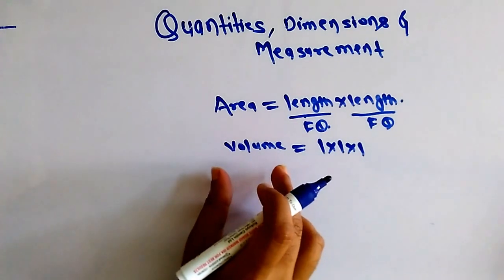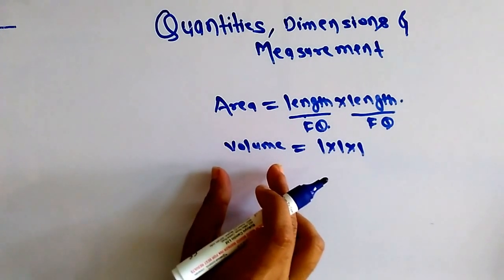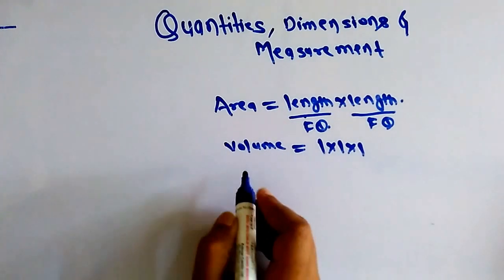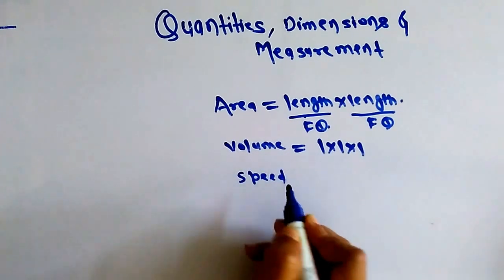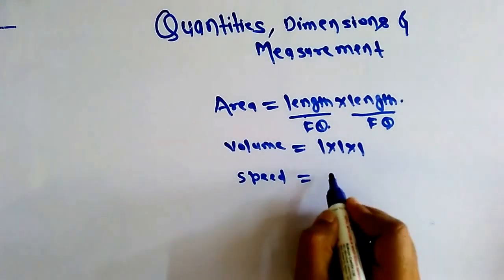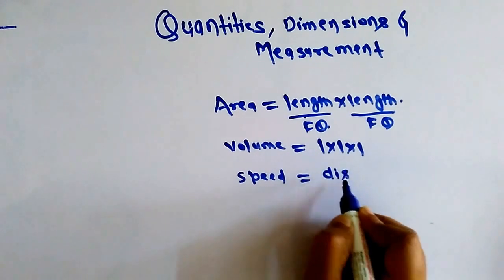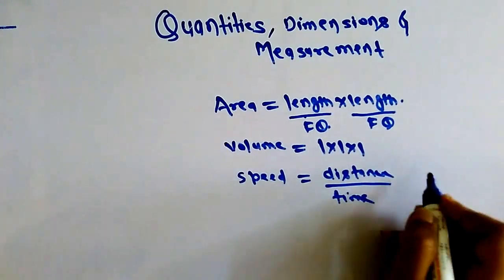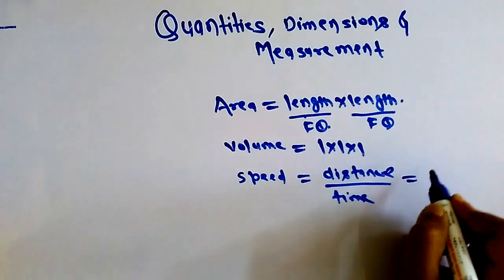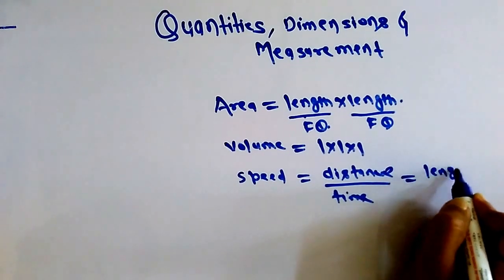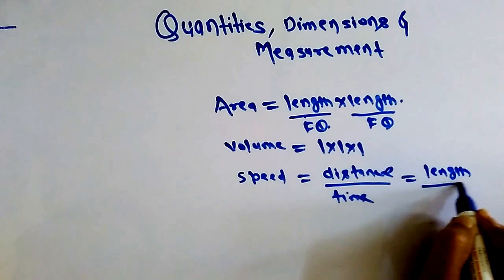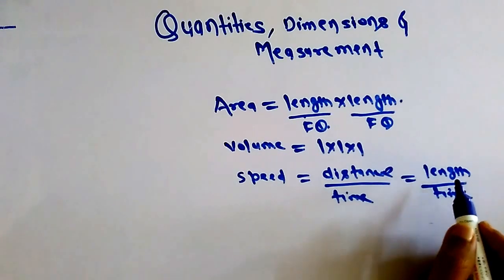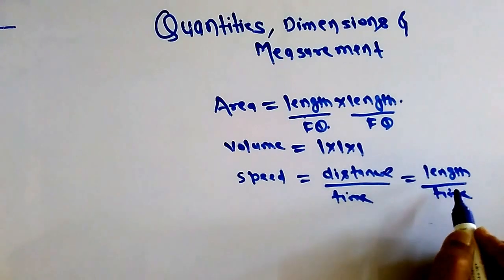Volume can be written as length × length × length, so volume is also a physical quantity that depends upon fundamental quantities. Speed equals distance per unit time — distance is length and time is a fundamental quantity — so speed also depends upon fundamental quantities.